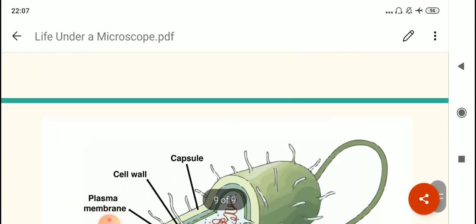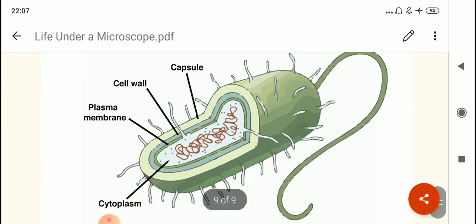Children, now see this diagram. Here you can see the slimy, outside protective covering, that is capsule. Then you can see inside it is the cell wall. Then plasma membrane, and followed by cytoplasm and nuclear material. The thread-like flagella is also visible.